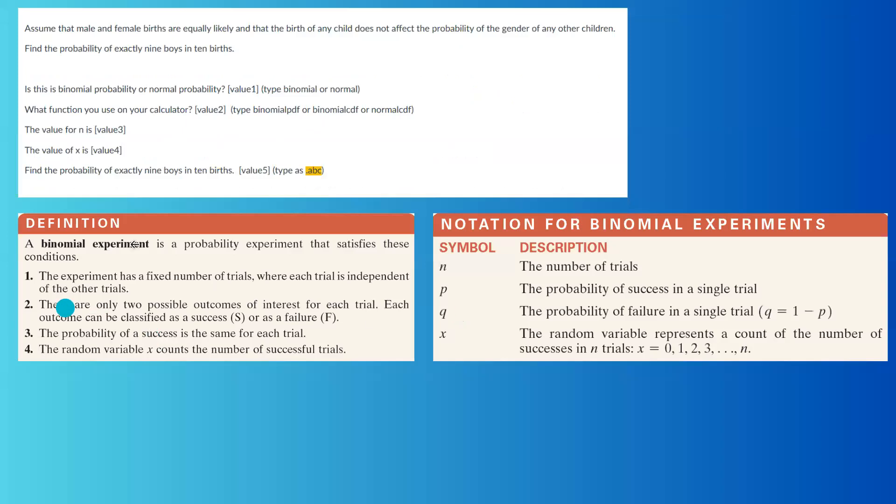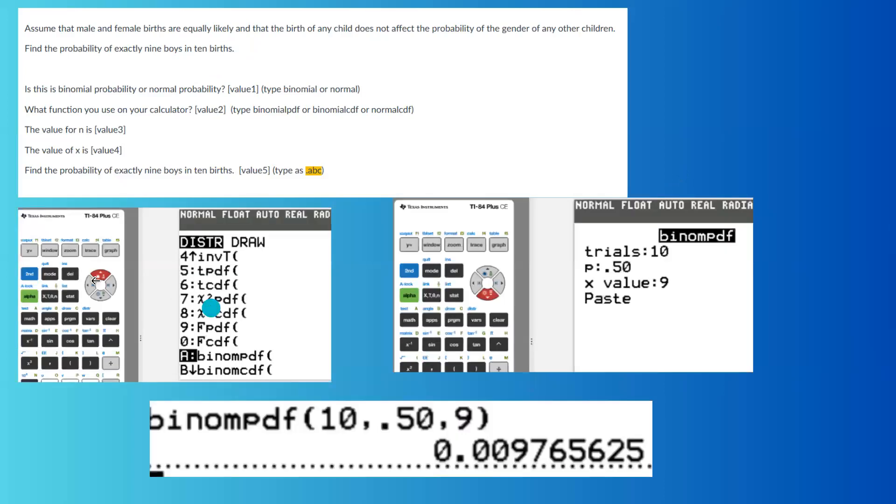Very good. Here you have a binomial experiment. The experiment has a fixed number of trials, which is going to be 10. There are only two possible outcomes. The probability of success is the same for each trial, and the random variable x counts the number of successful trials. N is the number of trials, p is the probability of success, and x counts the number of successes in your experiment.